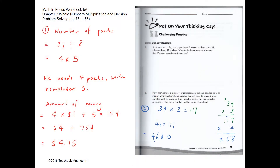Challenging practice. Question 1. A sticker costs 15 cents. A packet of 8 similar stickers costs $1. Clement buys 37 stickers. What is the least amount of money that Clement spends on the stickers?